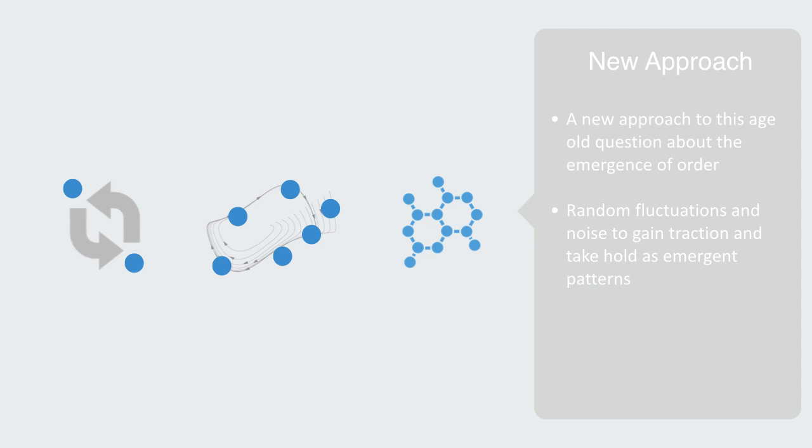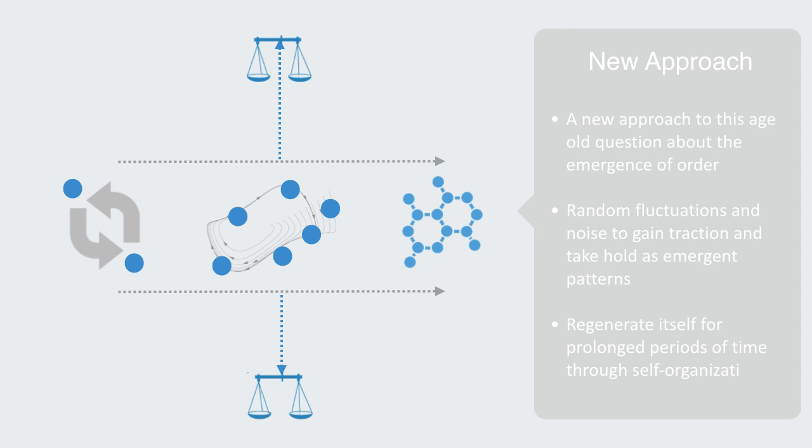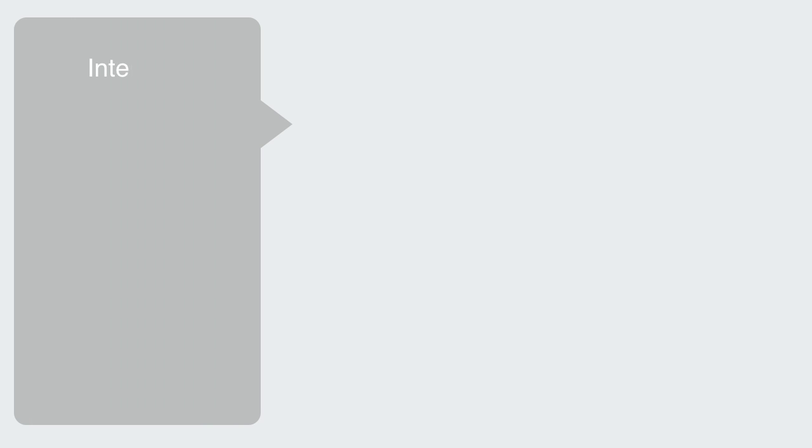When the system is far from its equilibrium, it can find a dynamic state between order and chaos that enables it to continue generating novel phenomena and regenerate itself for prolonged periods of time through self-organization. Thus, this new set of theories around self-organization recognizes a complex interplay between order and chaos.